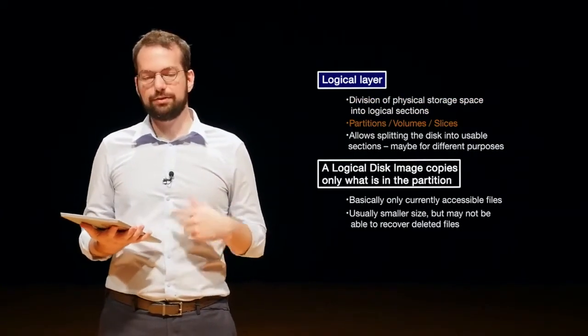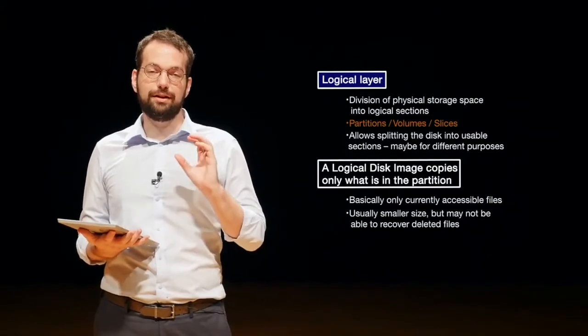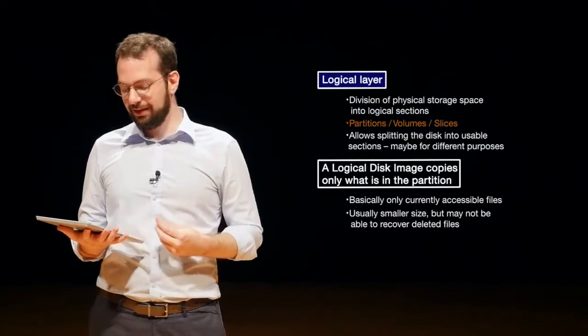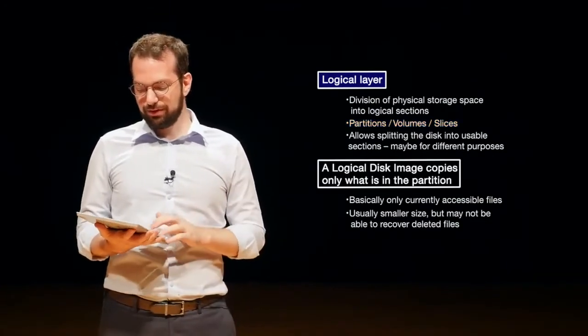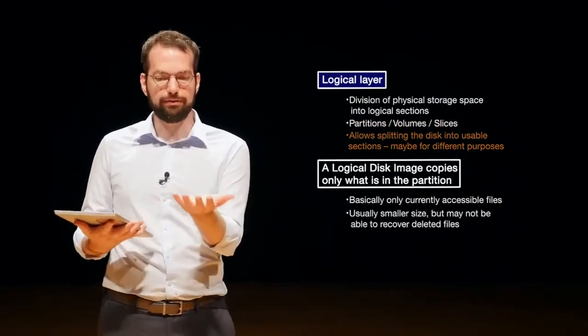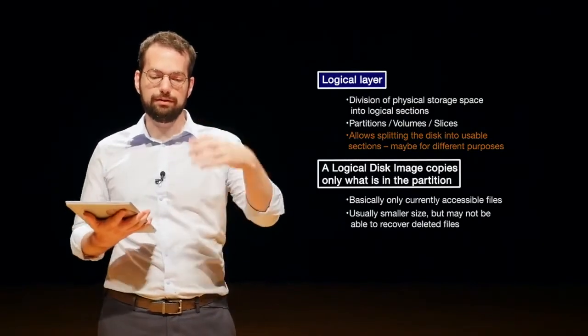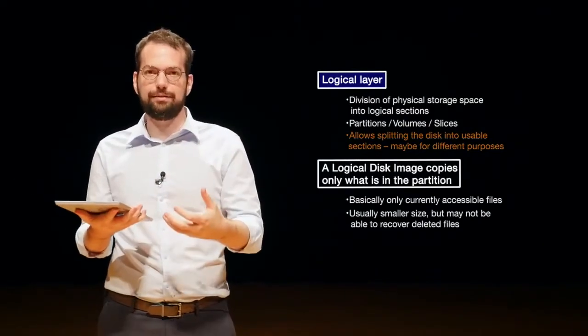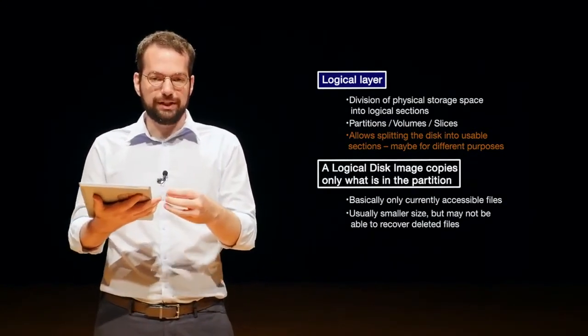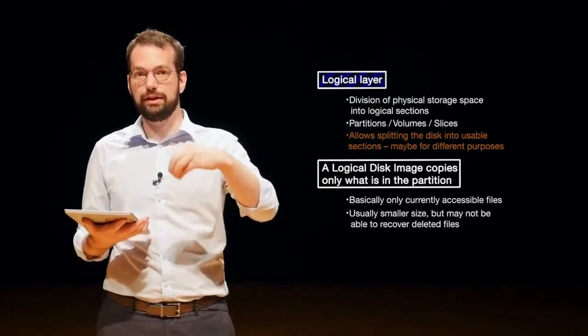We tend to call these logical divisions or logical volumes. In Windows, we call them partitions or volumes. In OSX, we call them slices. It allows the splitting of the disk into usable sections, maybe for different purposes. So basically, we have this physical hard drive and we have to get it ready to be able to store data. To do that, we have to make a logical kind of container inside. Using a data structure we'll talk about next time, we create a logical container inside the physical disk, that way we can store things inside of it.